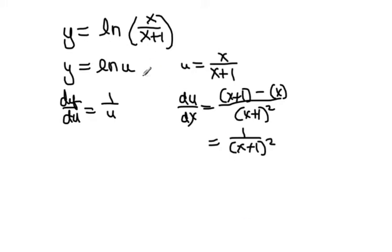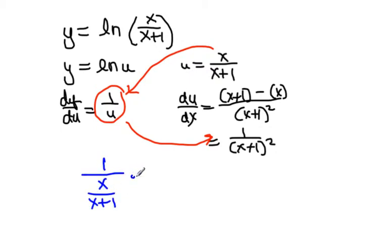So we know the little rhythm here. I'm going to take this value, I'm going to plug this in for u, and I'm going to multiply times du dx. So when I go ahead and do that, I'm going to get 1 over x over x plus 1 times 1 over x plus 1, all squared.